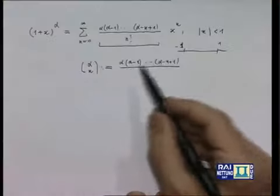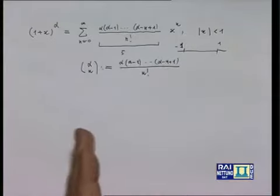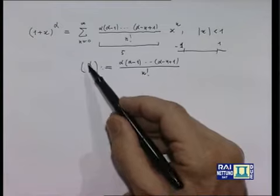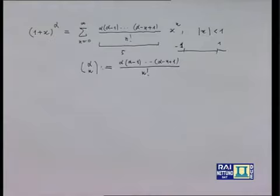Faccio osservare che, ove alfa fosse un numero naturale — diciamo 5 — quando comincio a fare il prodotto 5·4·3 e via calando, se mi ostinassi a considerare coefficienti binomiali con l'indice inferiore più grande di 5, contando 6 numeri a partire da 5 trovo 0.